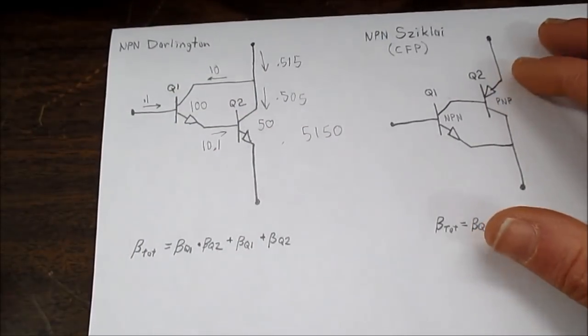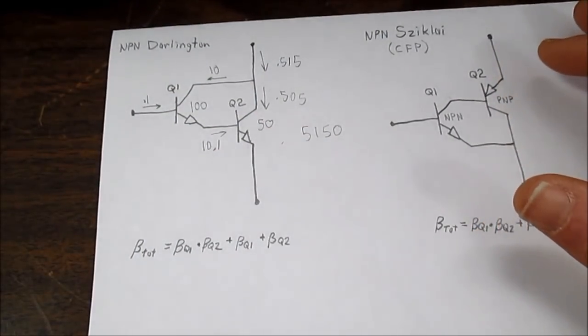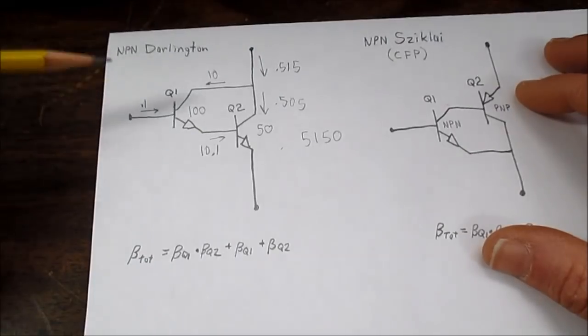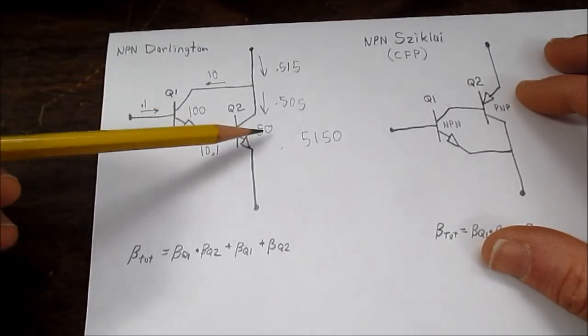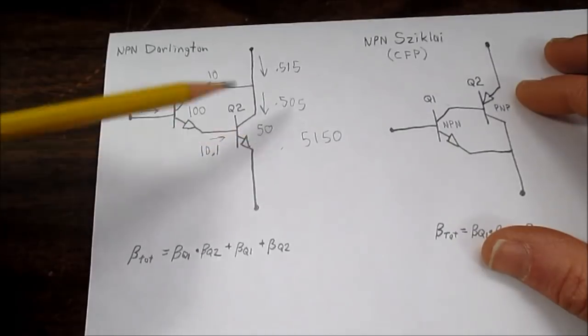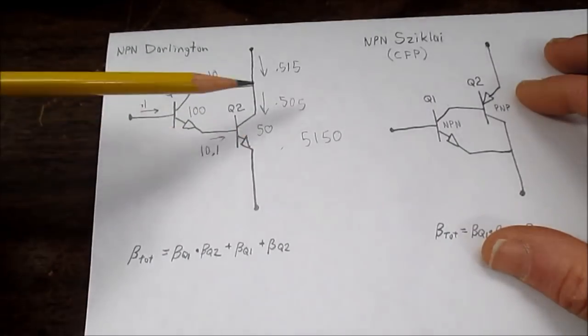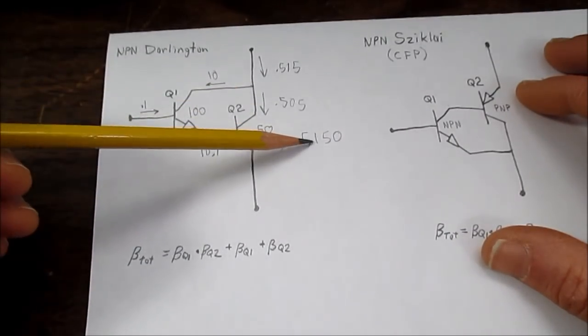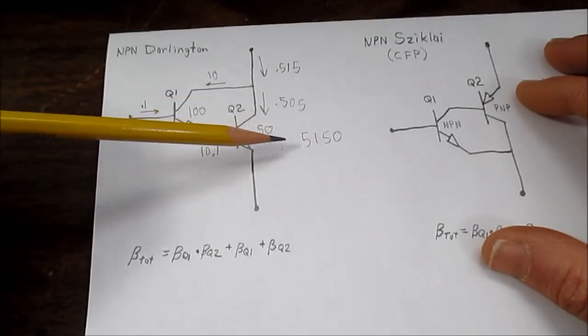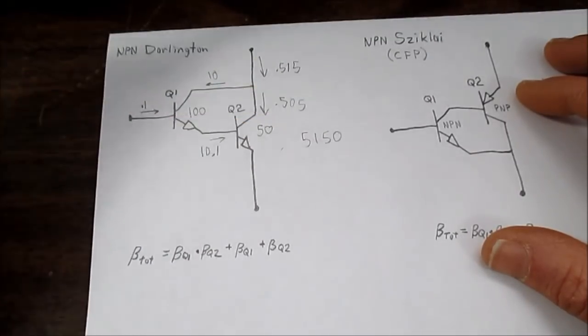So that's how we get the gain of the Darlington pair. Now you often hear people say it's just the gain of this times the gain of this transistor, and you can use that too, because in this case 5150 is not a lot of difference from just 5000.